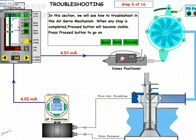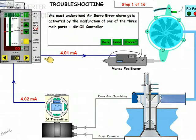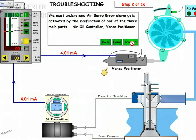Step 1 says we must understand that the air servo error alarm gets activated by the malfunctioning of any of the three main parts: first is the air oil controller, second is the vane positioner, and third is the DP transmitter — the differential pressure transmitter. We are going to identify which one is at fault.